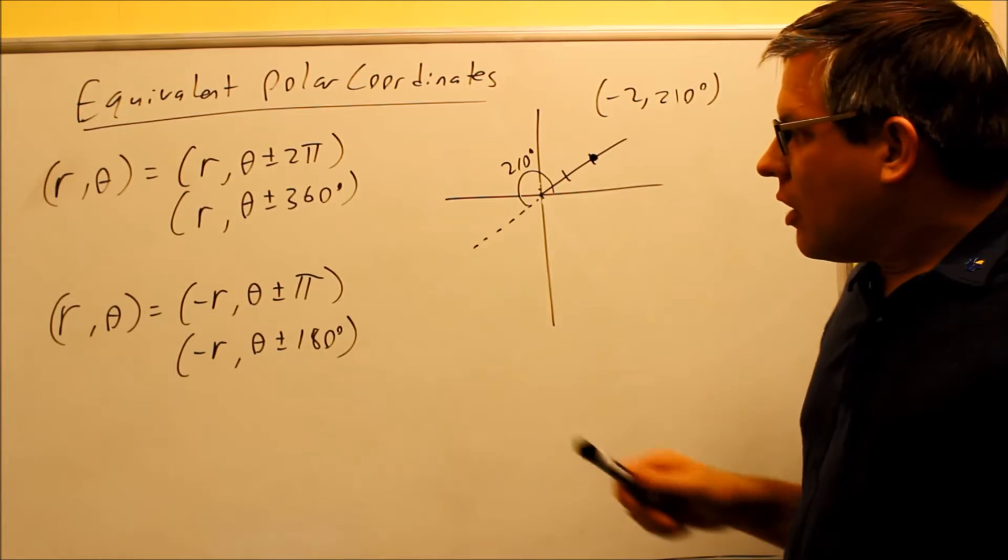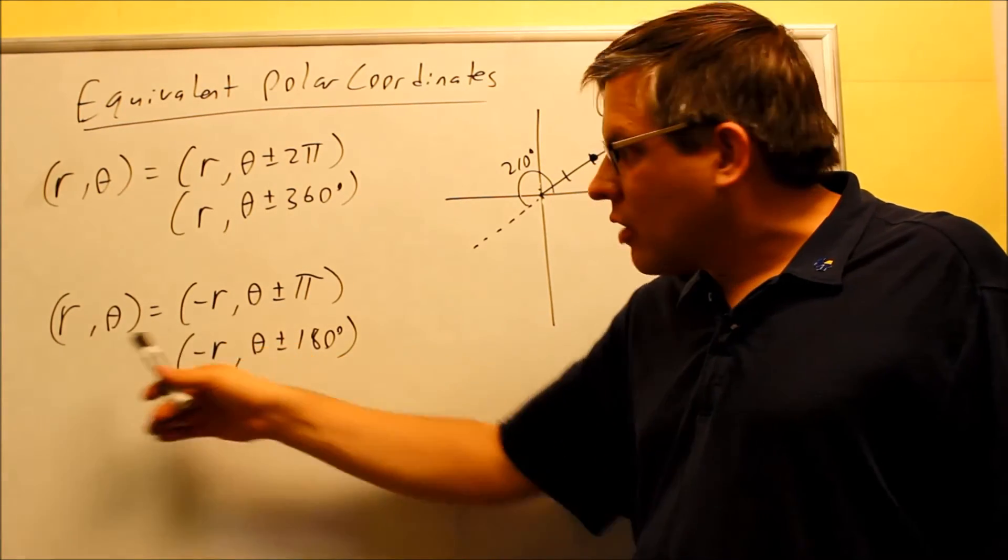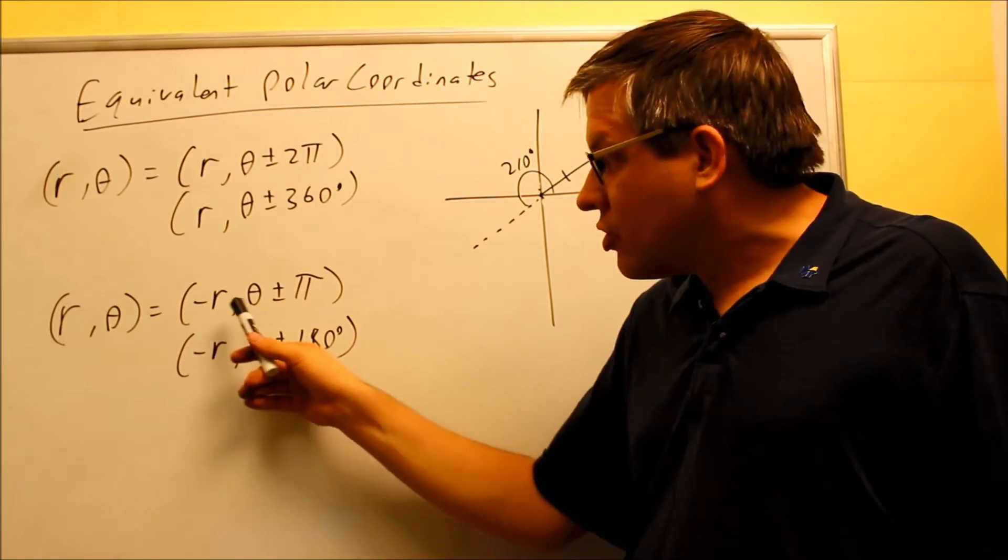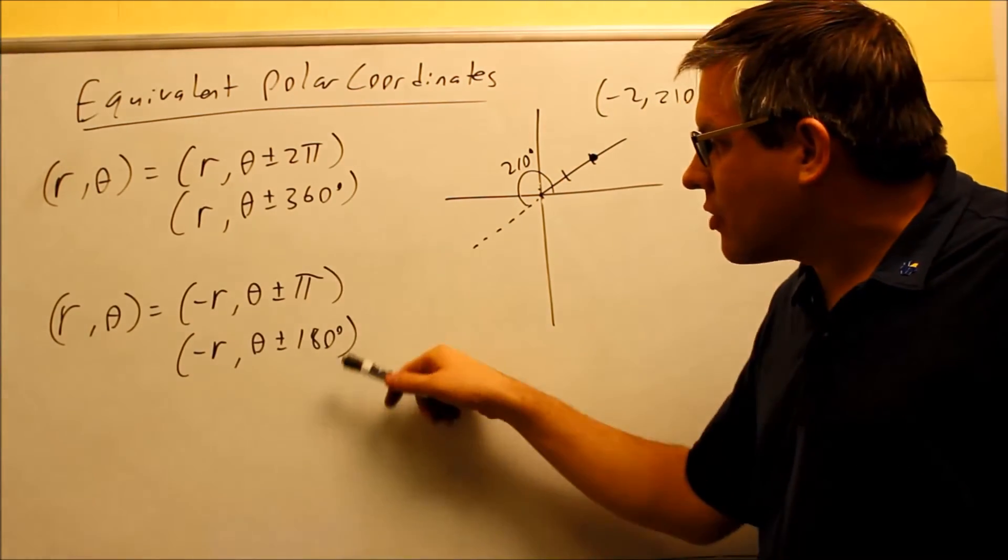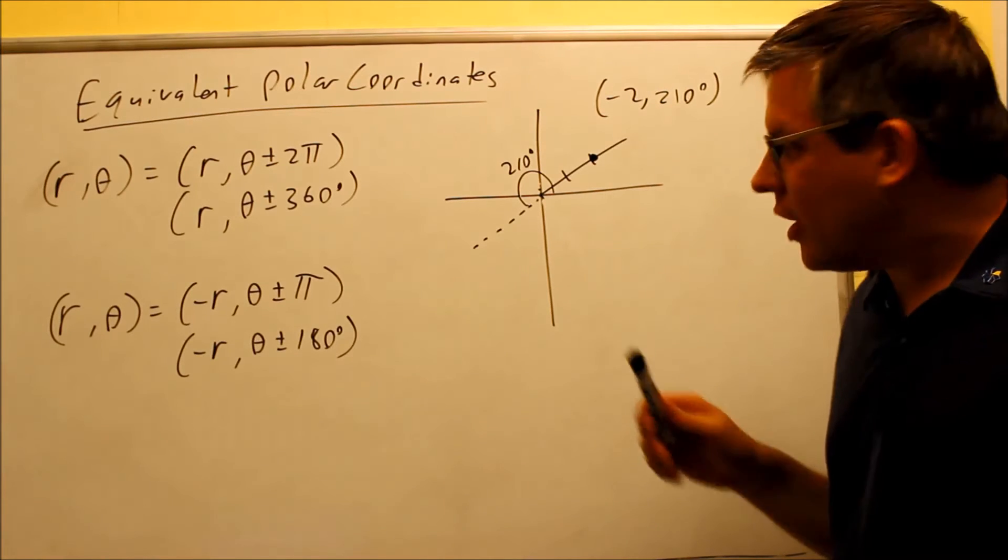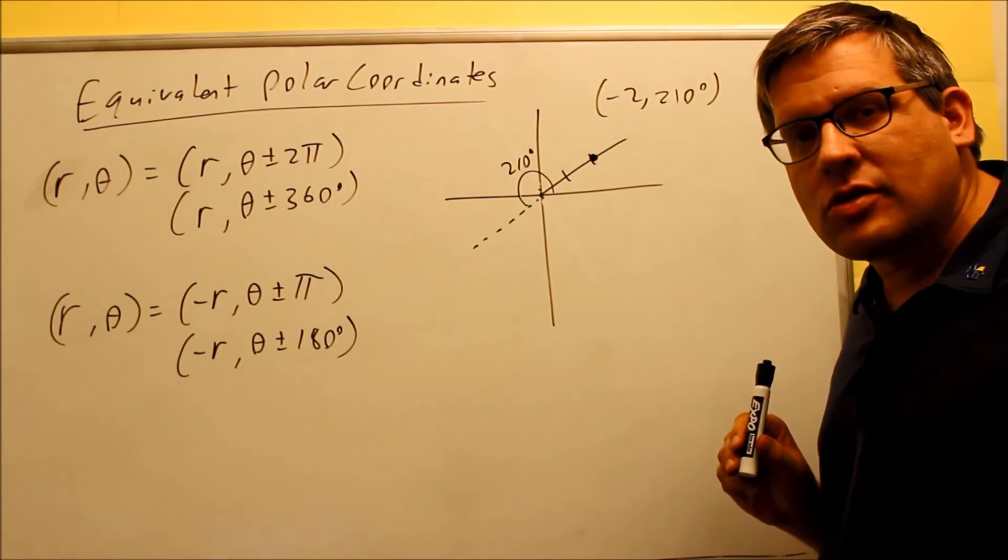Now these down here are where, if you want to change it from positive r to negative r, or also, if you start with a negative r here, you can change it to a positive. So you can actually change the sign of the r by adding or subtracting 180. Why is it 180? That's because whenever you plot the point, you've got to reverse it 180 degrees in the other direction.